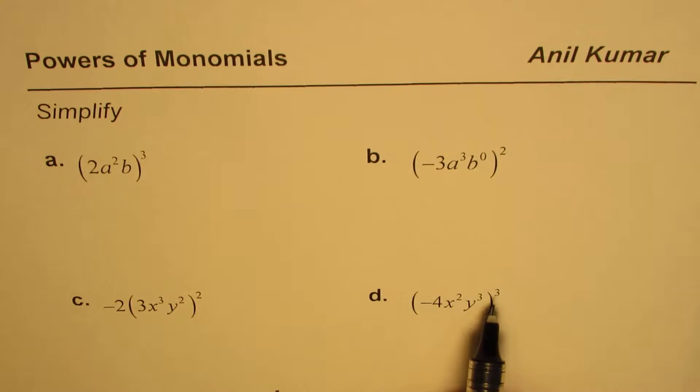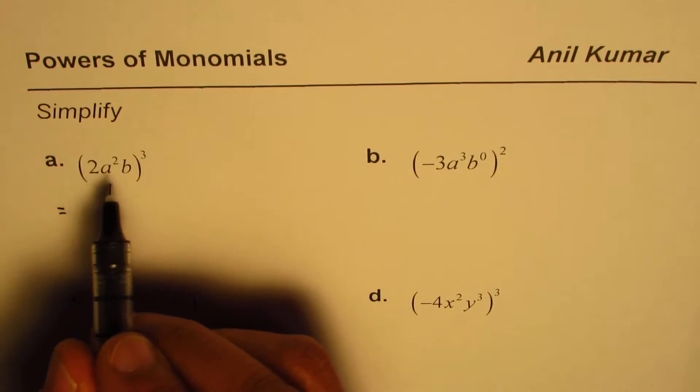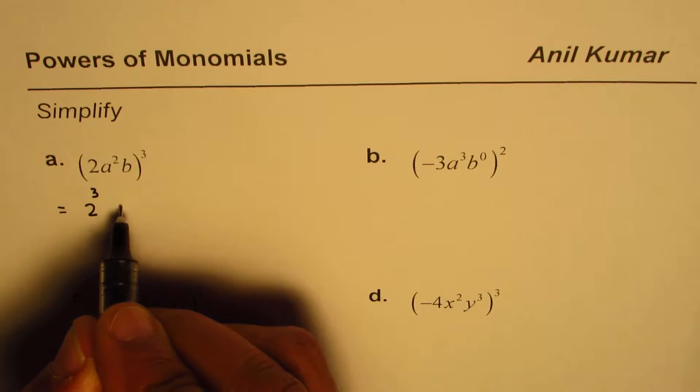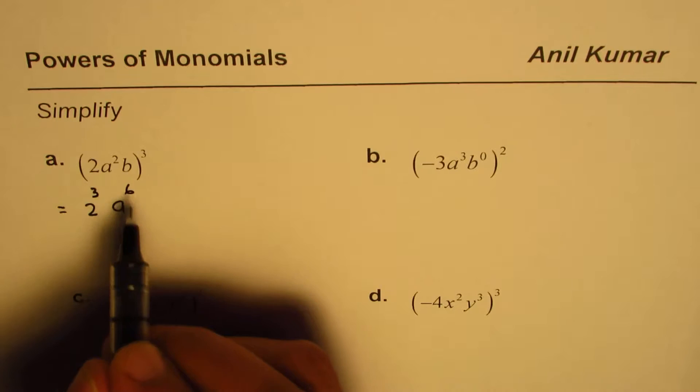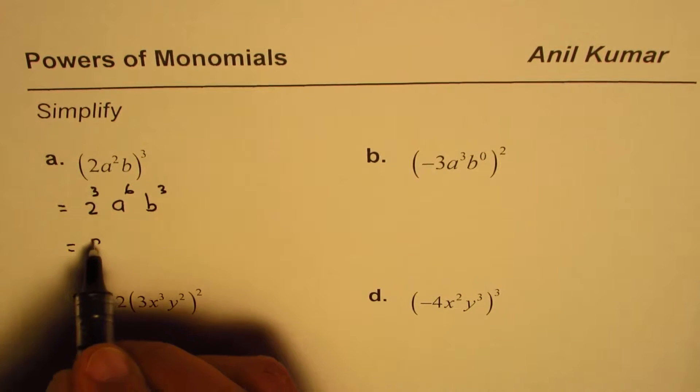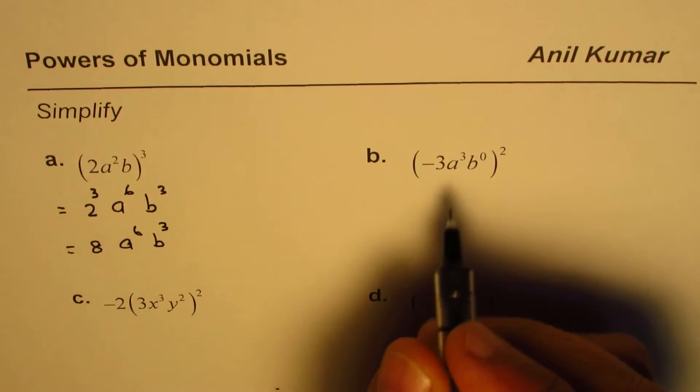Let's apply the power of power rules to open these brackets. So it'll be 2³, a to the power of 2 times 3 which is 6, and b³. 2³ is 8, so we can write this as 8a⁶b³.